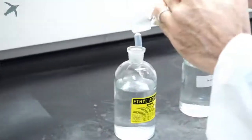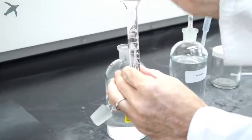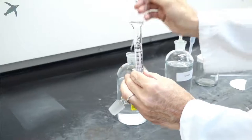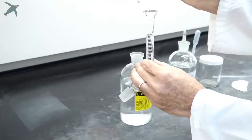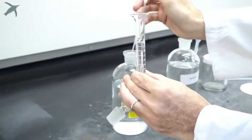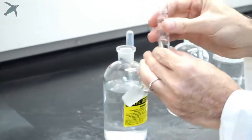And then you add your 3 mLs of ethyl acetate. Like so. You return the excess to the bottle and return the pipette.